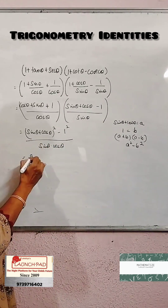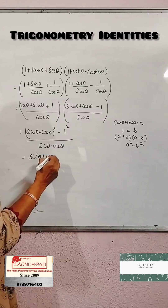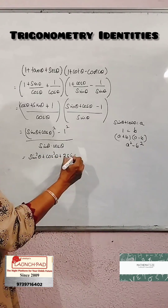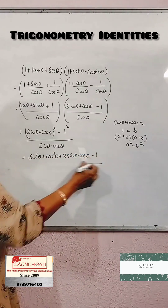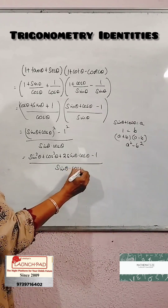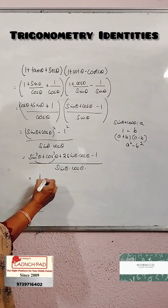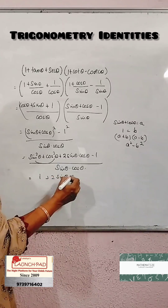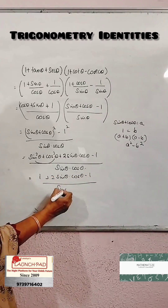Now we expand (sin θ + cos θ)² using the formula a² + b² + 2ab, giving sin²θ + cos²θ + 2 sin θ cos θ - 1, all over sin θ cos θ. Since sin²θ + cos²θ = 1, this becomes 1 + 2 sin θ cos θ - 1 over sin θ cos θ.